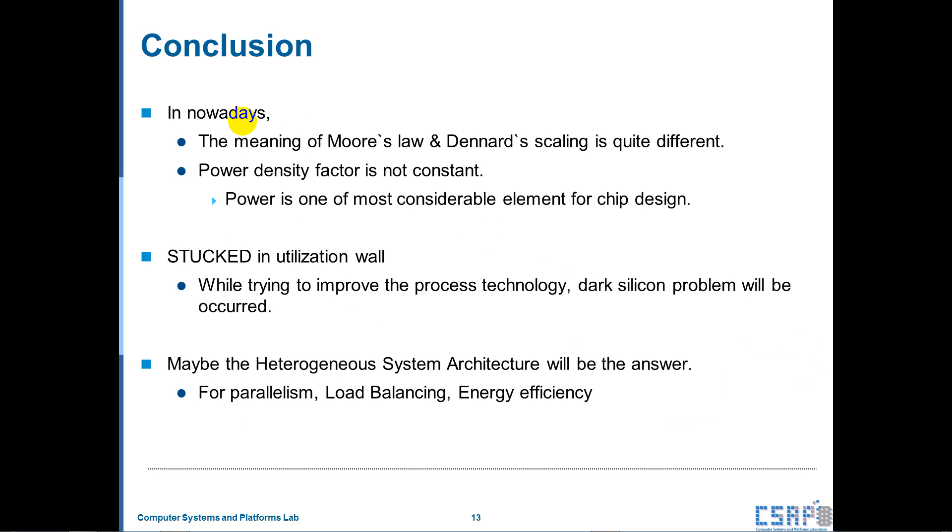We arrived at the conclusion. In nowadays, the meaning of Moore's law and Dennard scaling is quite changed. The power density factor is not constant anymore. If we want to try designing chip, we need to consider the power elements. Power is one of the most considerable elements for chip designing. But, through the designing, everyone stuck in the utilization wall. This principle, I didn't explain it, but it's almost same as the dark silicon. And while trying to implement the process technology, the dark silicon problem will be held. So we should find some solutions. One of the reasonable answer is the heterogeneous system architecture.